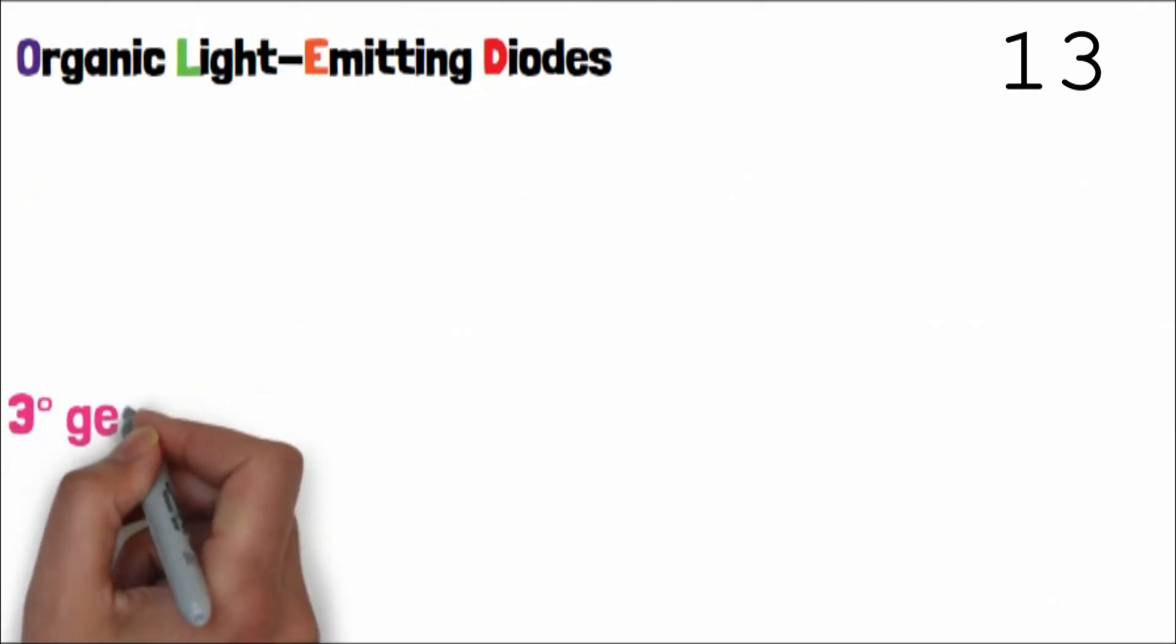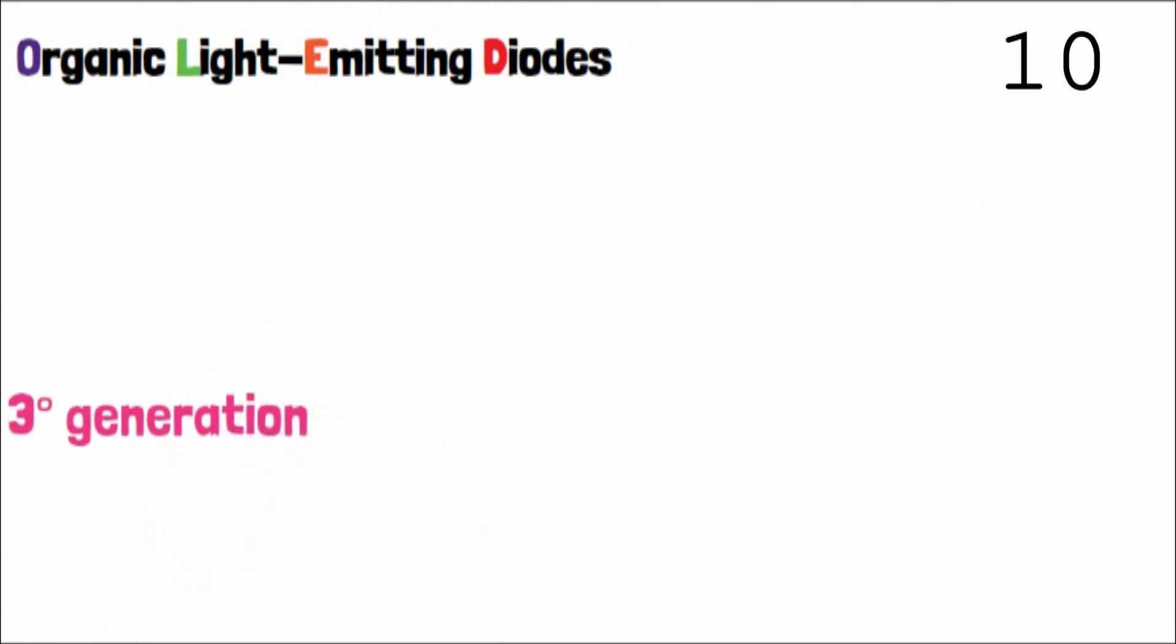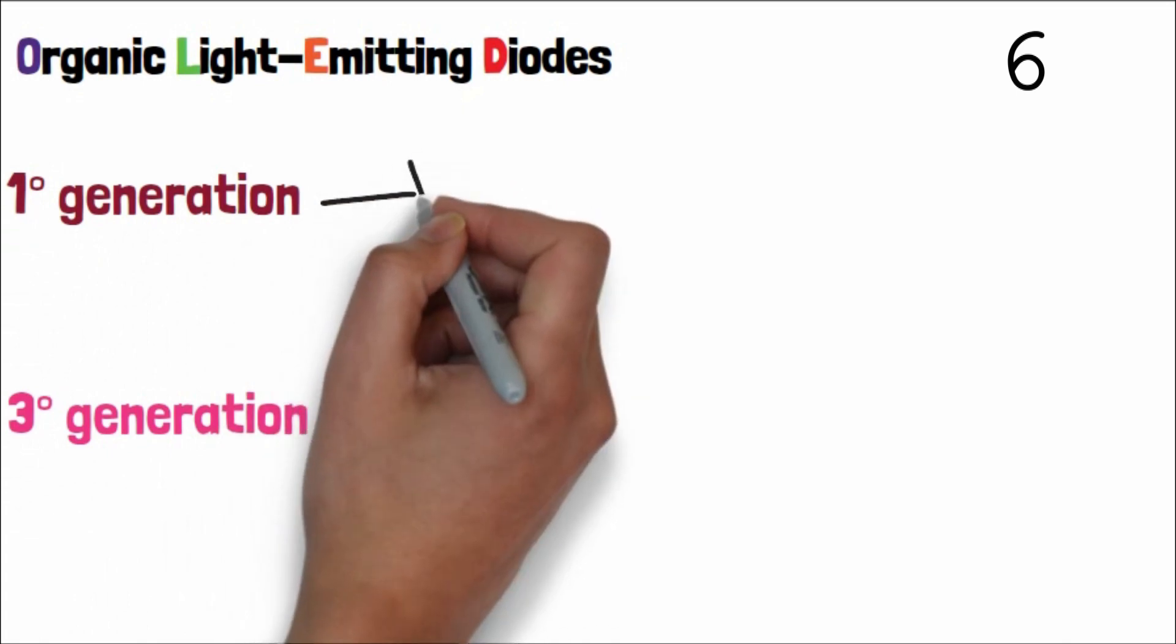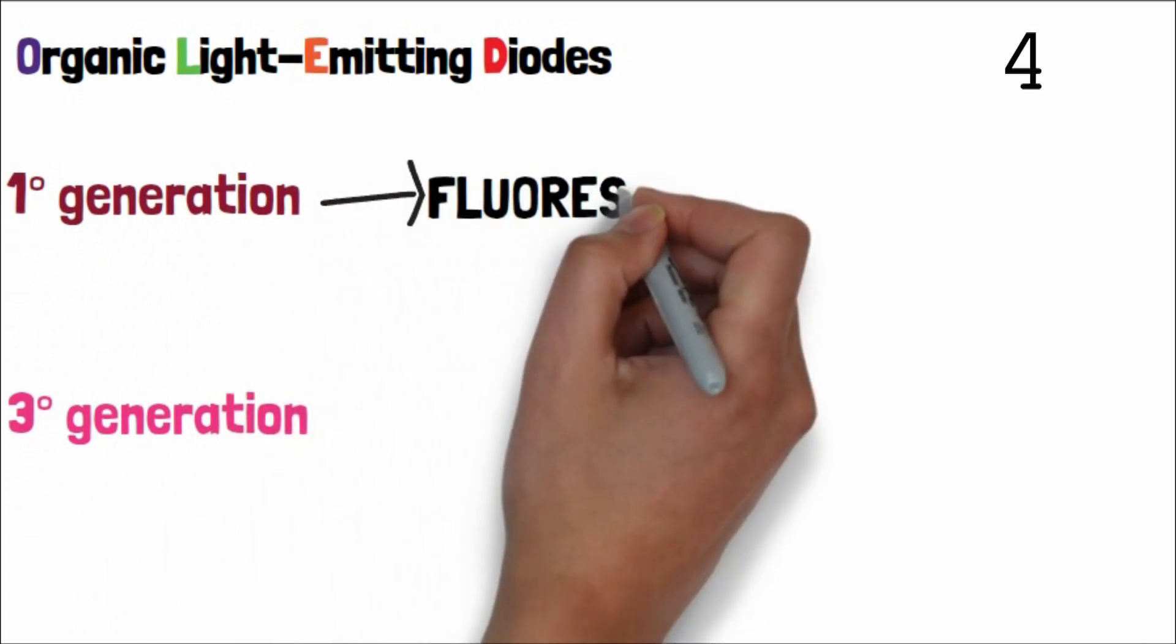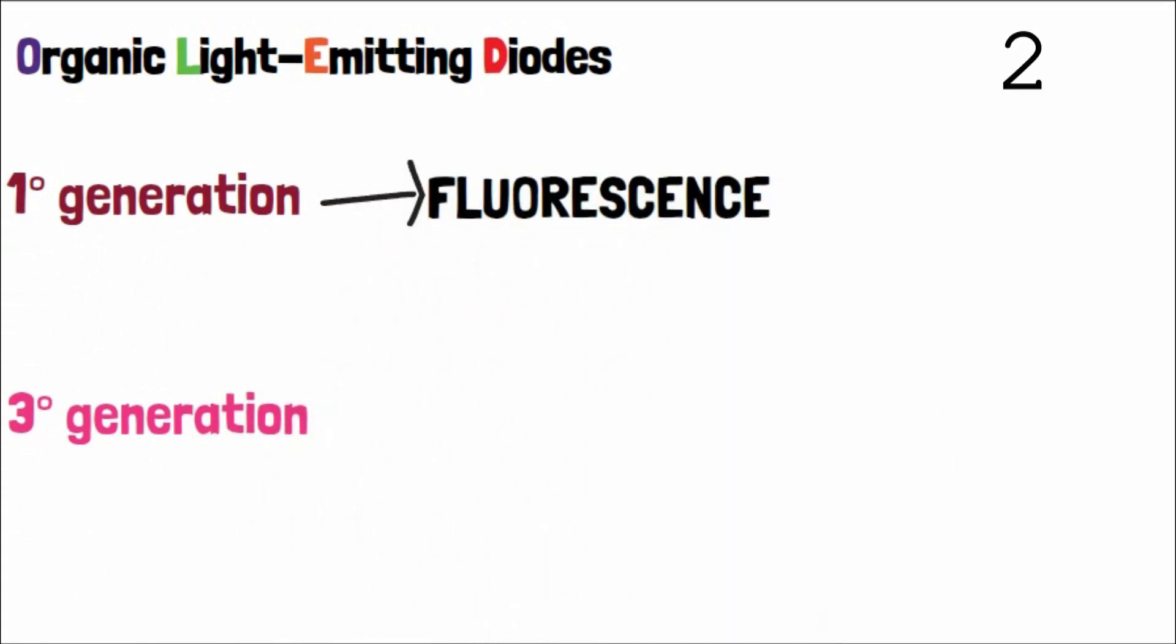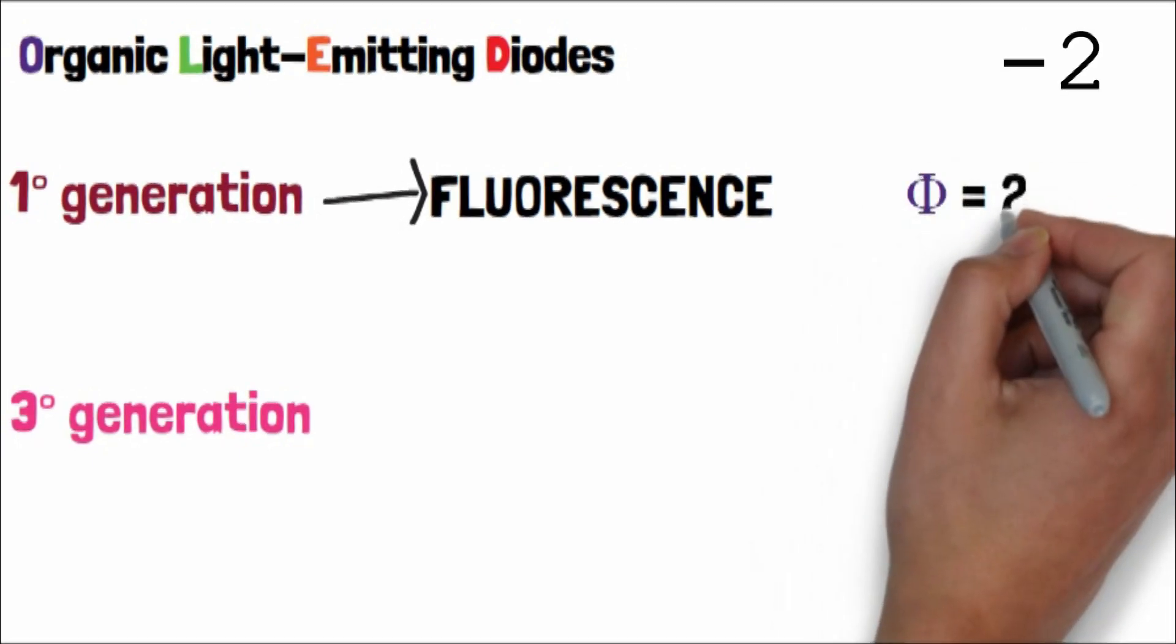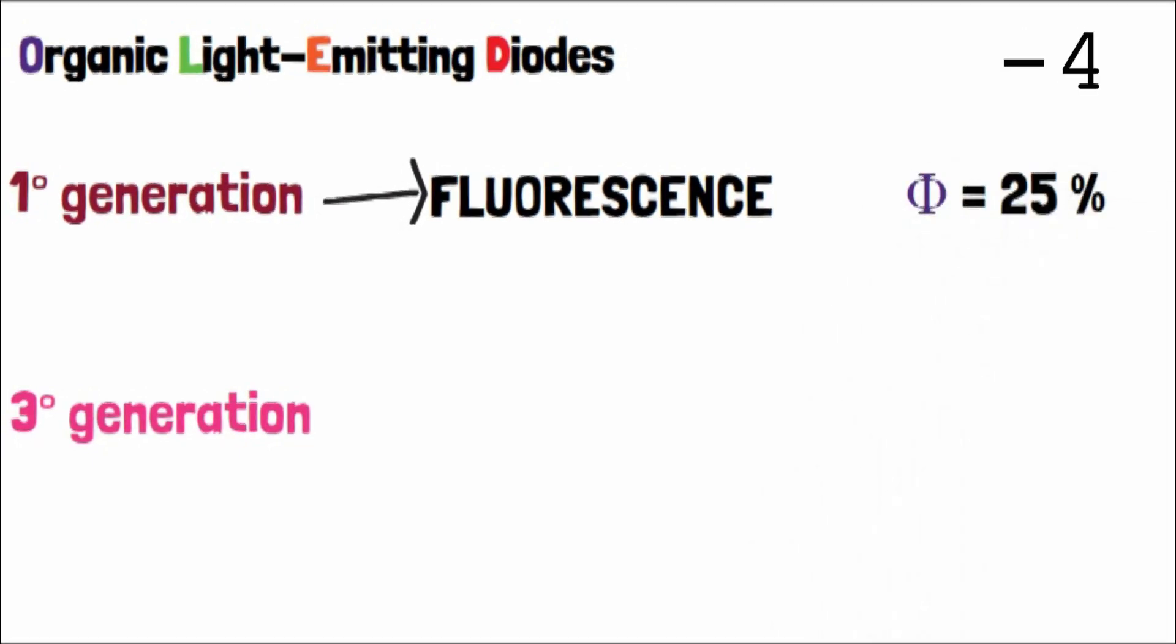Even if OLED technology looks new, we are already at the third generation. The first generation of OLEDs were the fluorescent OLEDs, based on fluorescence emission. However, these devices achieved only 25% of internal quantum yield.